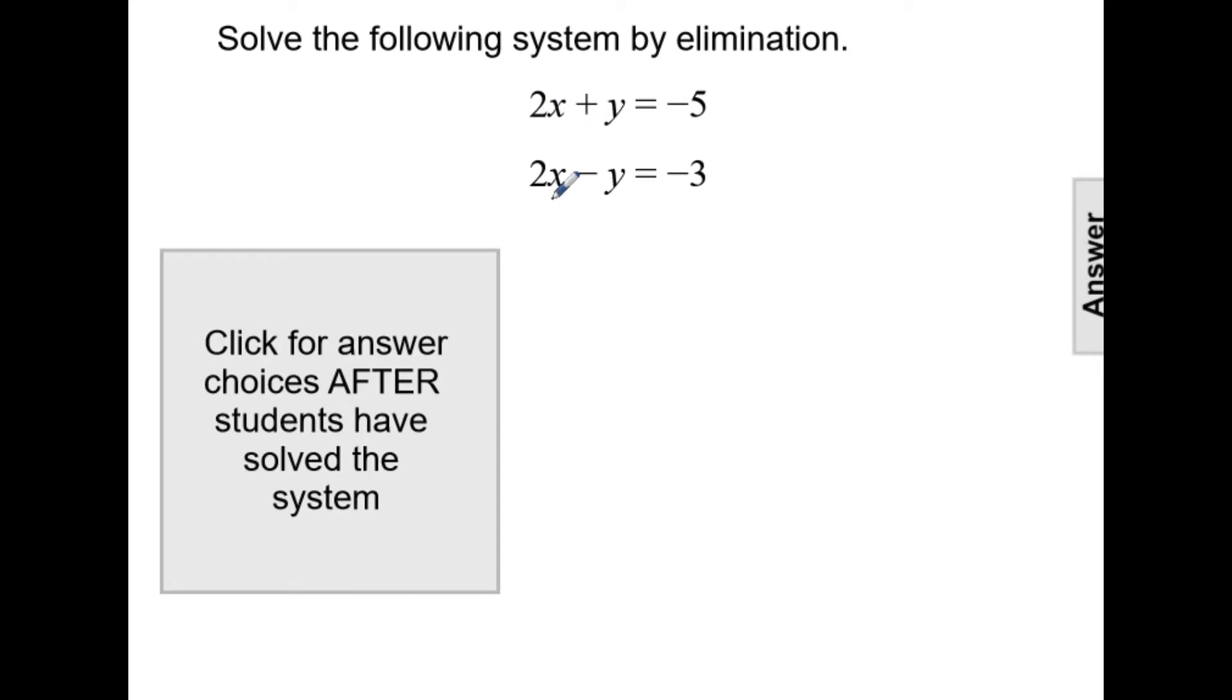So here we have 2x and 2x, and we have a positive 1 and a negative 1. So if we look at the y, a positive 1y and a negative 1y, which means if I add that together, it will eliminate the y variables.